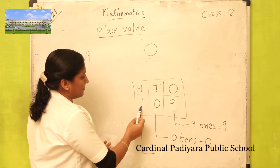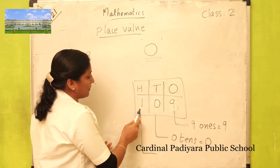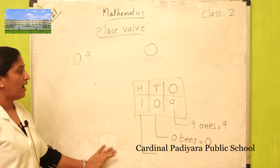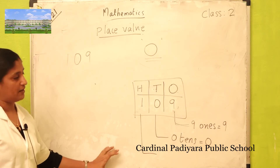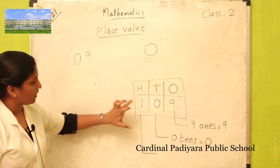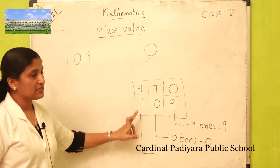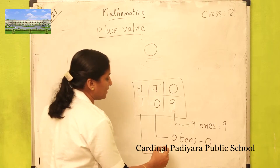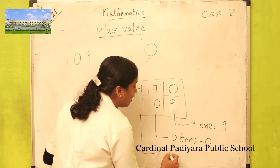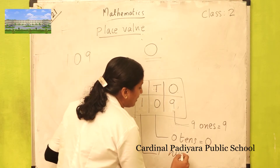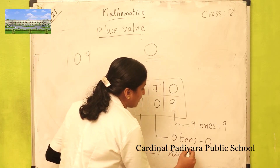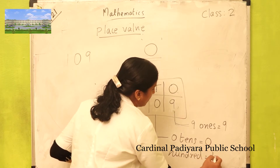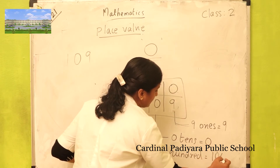What is the place value of one in one hundred nine? One is in hundreds place. How many hundreds? One hundred. One hundred — that is one zero zero.